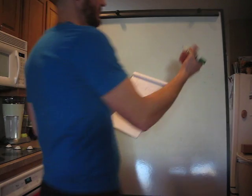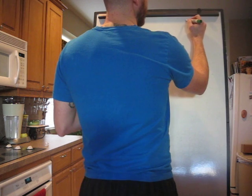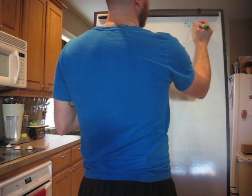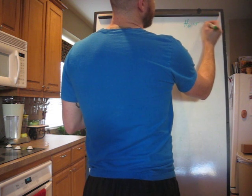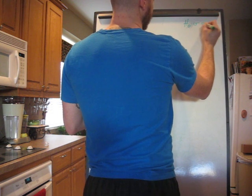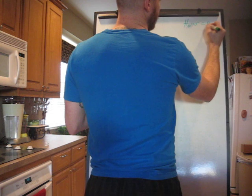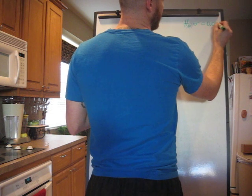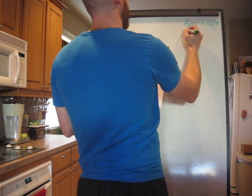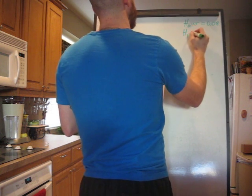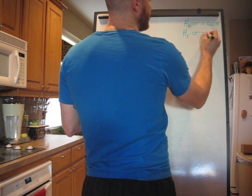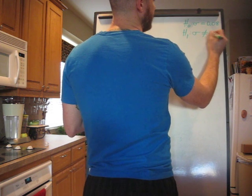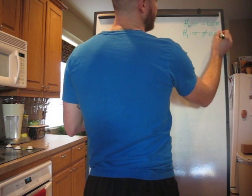So I'll go ahead and write our H0 and our H1 up here. Our H0 is population standard deviation equals 0.08. And our H1 is population standard deviation does not equal 0.08.